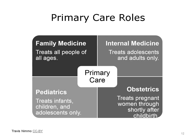Internal medicine provides care to adolescents and adults. Pediatrics provides care to infants, children, and adolescents. Obstetrics and gynecology, or OBGYN, provides services to women including during pregnancy and childbirth, and specializes in the female reproductive system. Because many women obtain primary care services from their obstetrician or gynecologist, it is often considered a primary care specialty. If a patient does not have a primary care physician, he or she may seek primary care in a hospital's emergency facility, in a freestanding urgent care center, or from a specialist seen on a frequent basis.